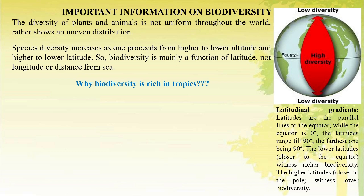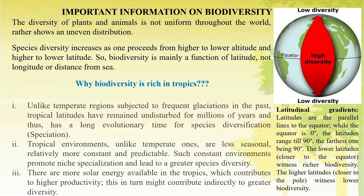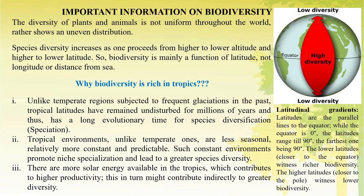Why is biodiversity rich in tropics? Unlike temperate regions subject to frequent glaciation in the past, tropical latitudes have remained undisturbed for millions of years and thus have had a long evolutionary time for species diversification. Tropical environments, unlike temperate ones, are less seasonal, relatively more constant and predictable. Such constant environments promote niche specialization and lead to greater species diversity. There is also more solar energy available in the tropics, which contributes to higher productivity, which in turn might contribute indirectly to greater diversity.